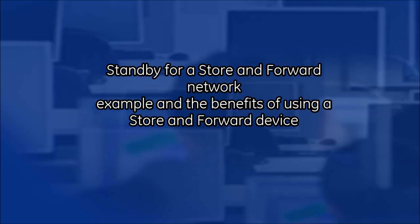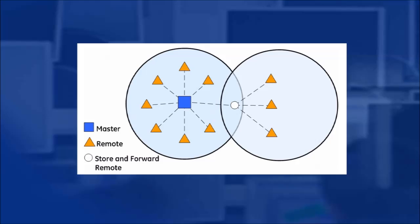Stand by for a brief pictorial example of a storm forward system field installation and the benefits of using a storm forward device. The storm forward feature can be used to link outlying remotes to an AP when direct communication is not possible due to terrain, distance, or other obstructions. Only storm forward traffic is sent through the storm forward unit, conserving critical bandwidth in the network. Storm forward operation extends a wireless network's coverage area by electing a device or devices to store data and forward it to a unit or units beyond the reach of the primary coverage area. Storm forward designated units act as smart single radio packet repeaters.